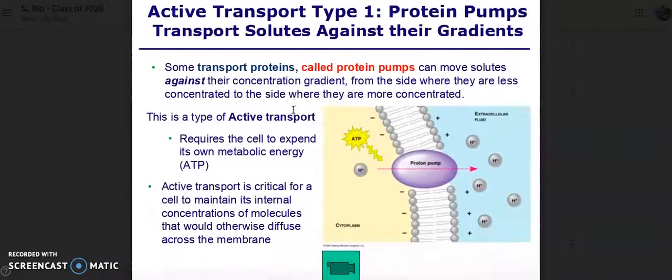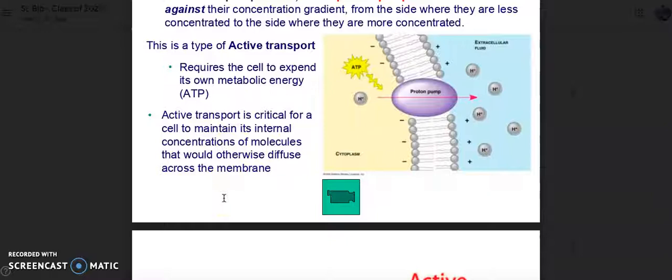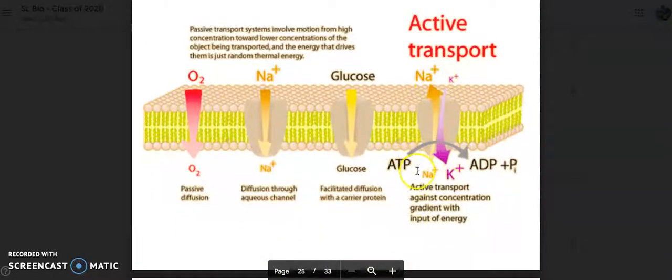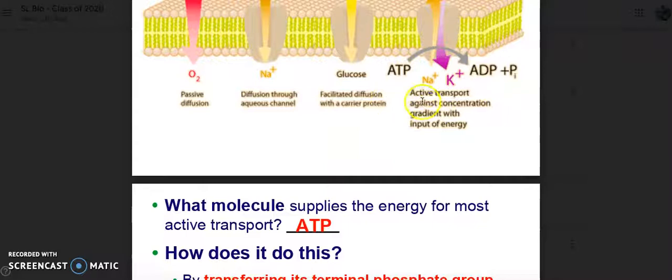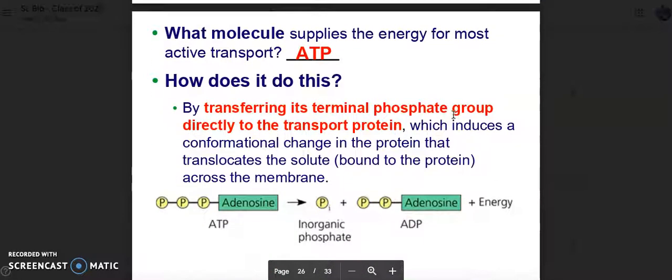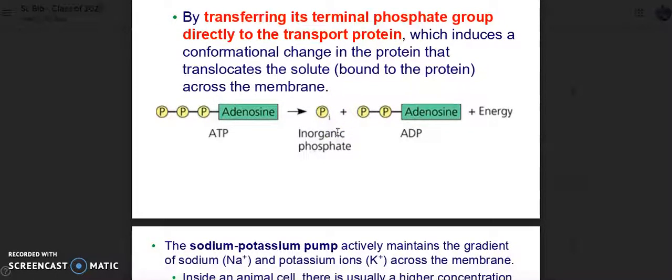Let's talk about active transport type 1 protein pumps. Some transport proteins, called protein pumps, can move solutes against their concentration gradient from the side where they are less concentrated to a side where they are more concentrated. This is called active transport and requires the cell to expend its own metabolic energy. Active transport is critical for a cell to maintain its internal concentrations of molecules that would otherwise diffuse across the membrane. An example would be the sodium-potassium pump. Active transport against concentration gradient with an input of energy. What molecule is needed to do this? ATP. And how does it do this? By transferring its terminal phosphate group directly to the transport protein, which induces a conformational change in the protein that translocates the solute bound to the protein across the membrane.